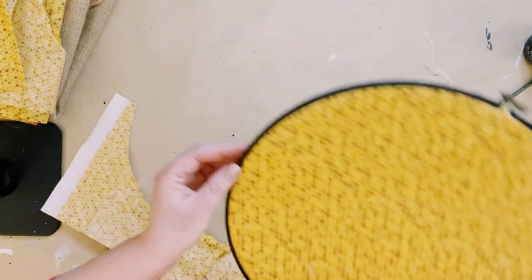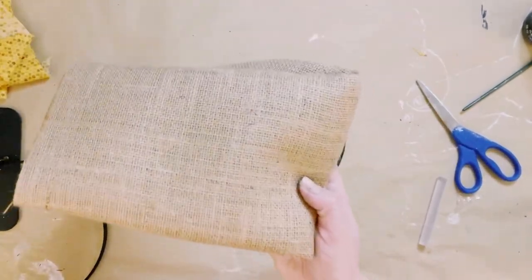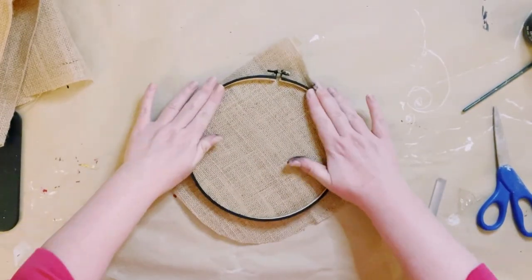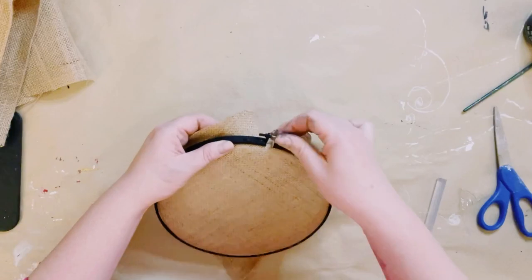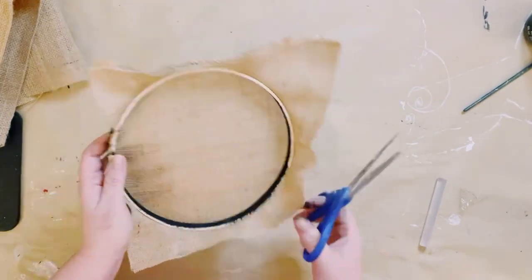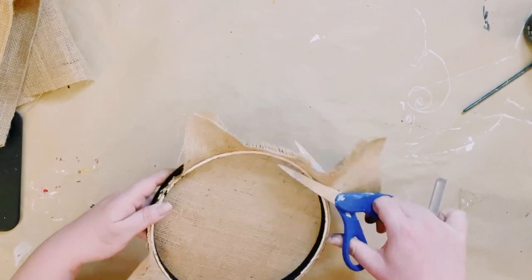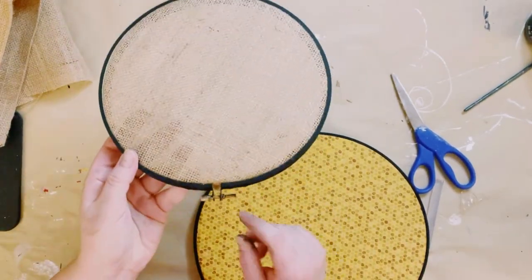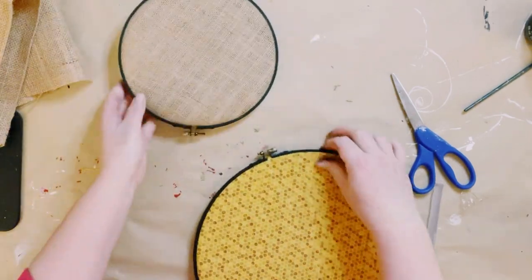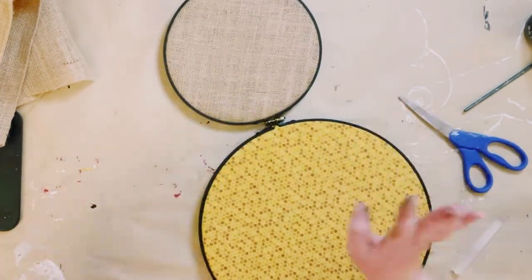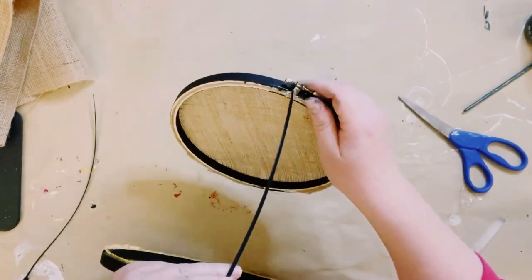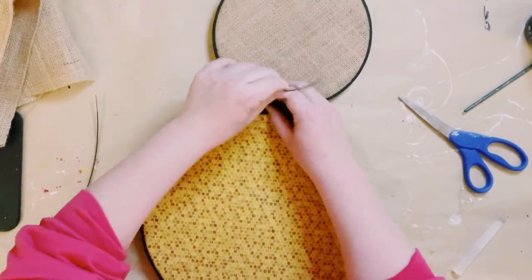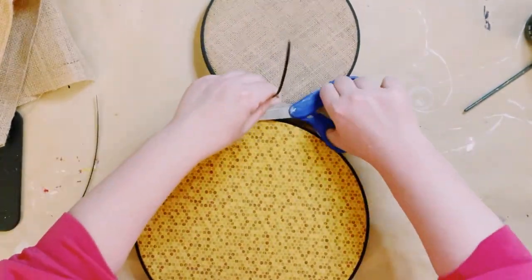Now I'm going to grab the smaller embroidery hoop. For this one, I grabbed this natural burlap fabric, also from Hobby Lobby. Just doing the same thing, placing it onto that embroidery hoop. Make sure it's nice and snug, tighten the embroidery hoop, and then cut off any of that excess. Now to hold these two embroidery hoops in place, I'm just intertwining the tops of them, and I'm going to be holding these together using a zip tie. Go ahead and put those aside.